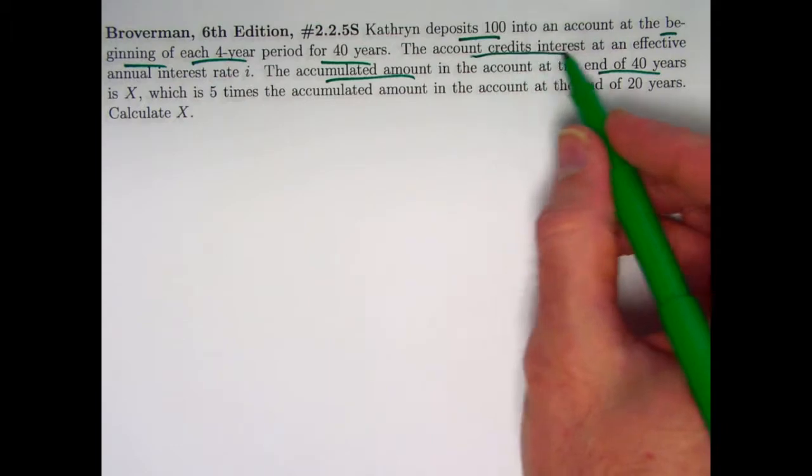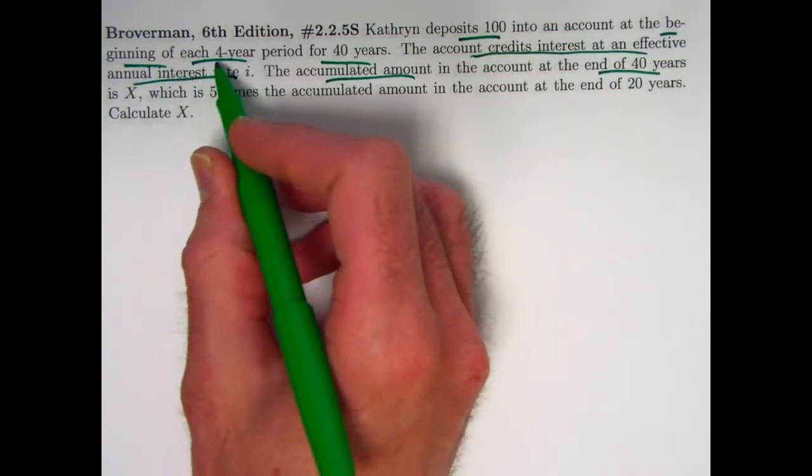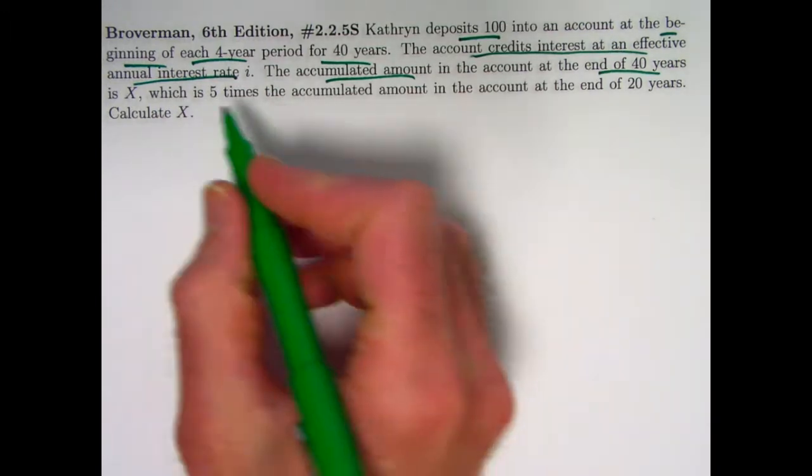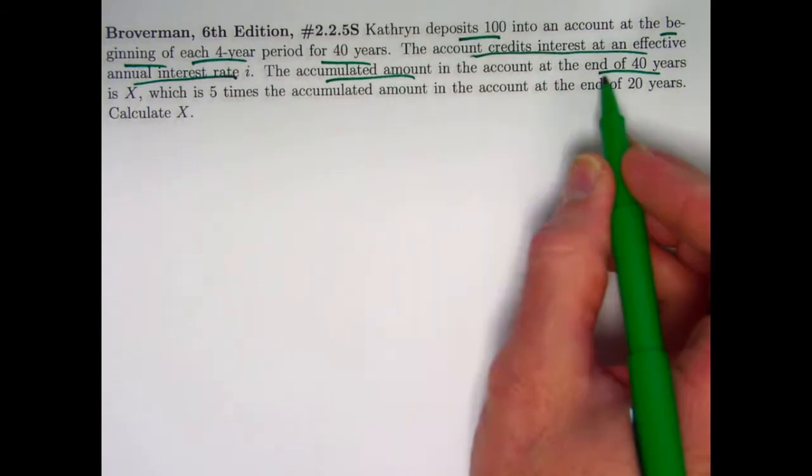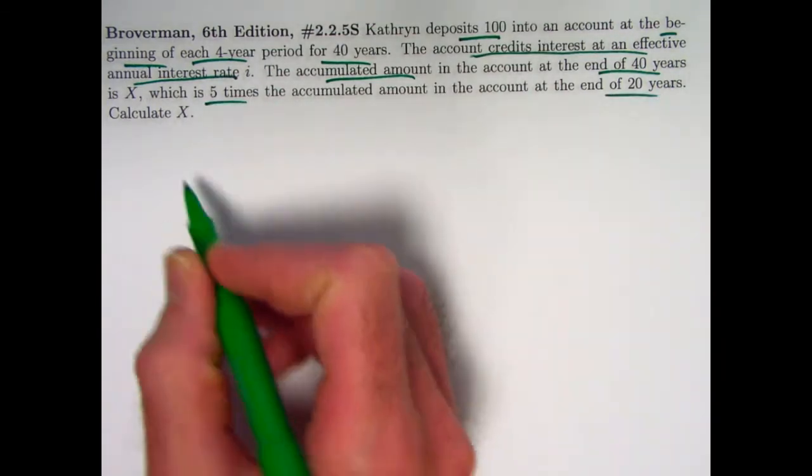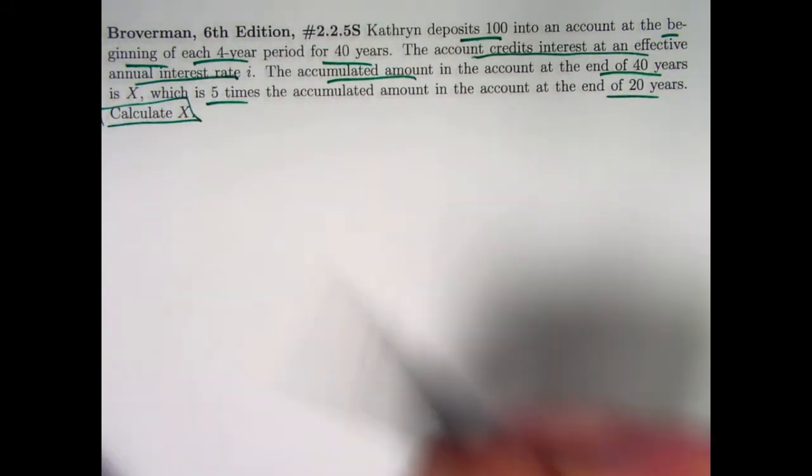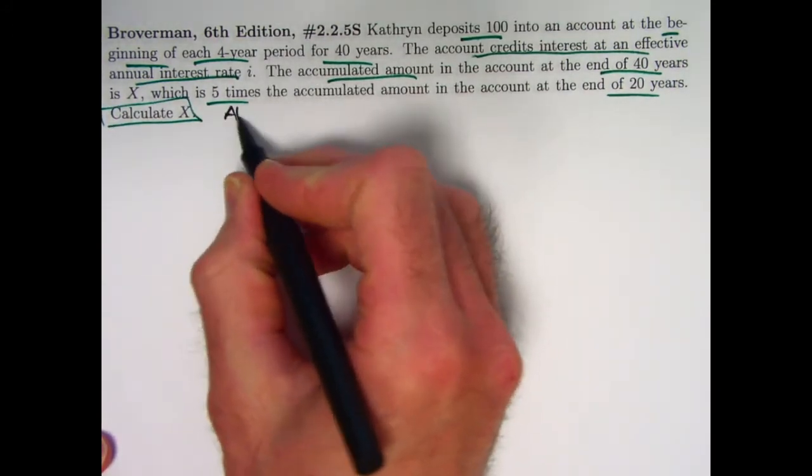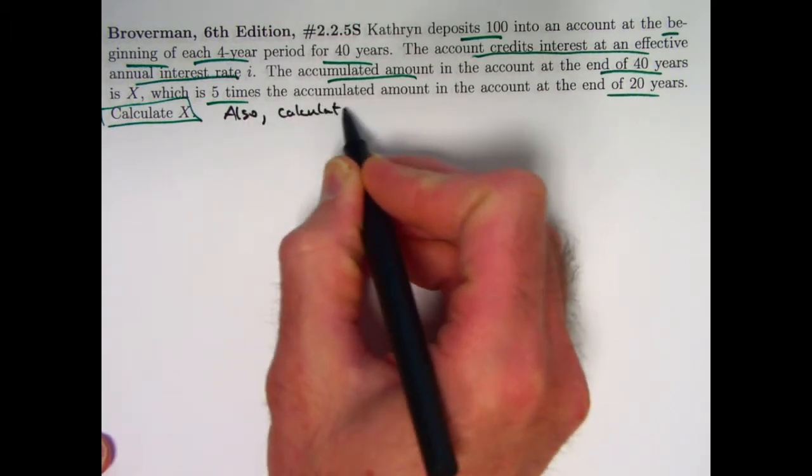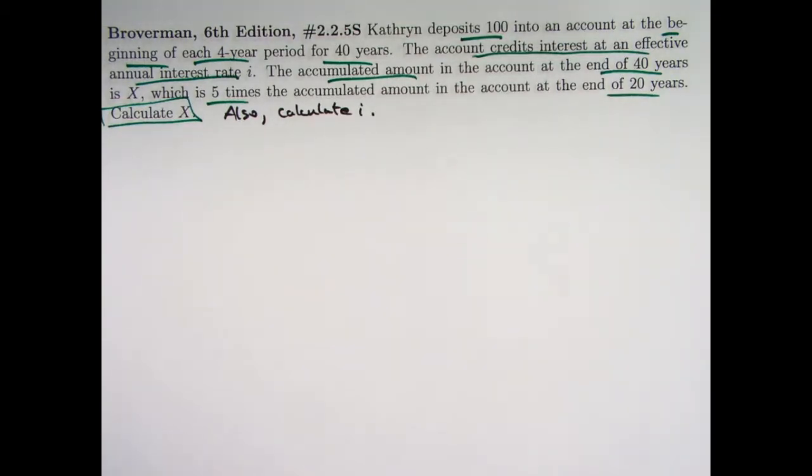The account credits interest at an effective annual interest rate of i, but notice that's an annual interest rate, whereas her deposits are every four years. So we have these differing intervals. The amount at the end of 40 years is five times the amount at the end of 20 years. Calculate x, and let me add my extra thing in here as well. Also, calculate i, even though that's not part of the original question. I think it's of interest here because these are differing intervals.